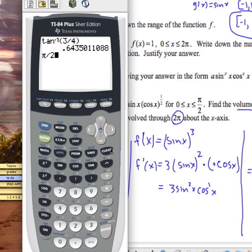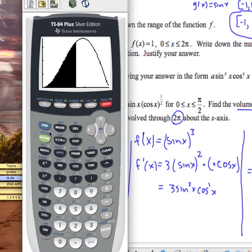0 to pi over 2. Oops, that didn't work. Sorry. Graph. Did it work? Calc number 7, 0, enter, pi over 2, enter.